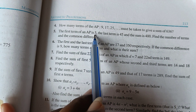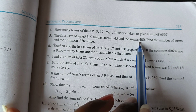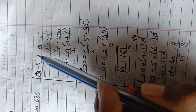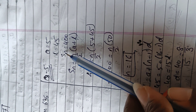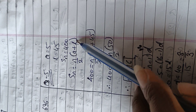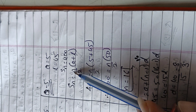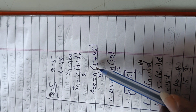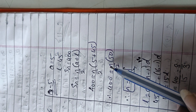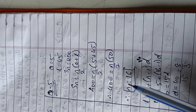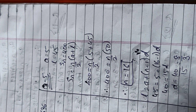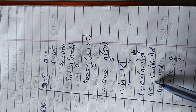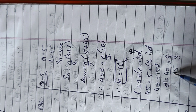Question 5: First term A = 5, last term L = 45, sum = 400. Find number of terms and common difference. Using Sn = n/2 × (A + L): 400 = n/2 × (5 + 45) = n/2 × 50, giving N = 16. Then using AN = A + (N−1)D: 45 = 5 + 15D, so D = 40/15 = 8/3.